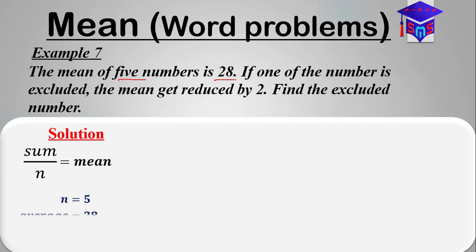Our average or the mean is 28. So you fix these values into our basic deduction and you'll be having sum over 5 equals 28. Multiply both sides by 5 and you'll be having the sum equal to 28 times 5, which is 140.